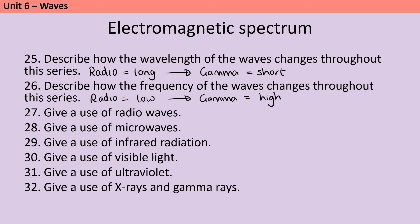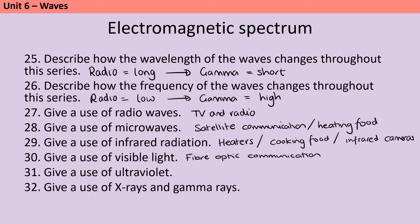Radio waves can be used for TV and radio. Microwaves can of course be used in microwave ovens, but they're also used for satellite communication and sending text messages. Infrared radiation can be used for heaters, for cooking food and for infrared cameras. Visible light is used within fiber optic communication, so beams of visible light are literally bounced off fiber optic cables. Ultraviolet light comes in suntan beds and also in energy efficient lamps. And x-rays and gamma rays are both used for medical imaging and also for medical treatments, for instance cancer therapies.